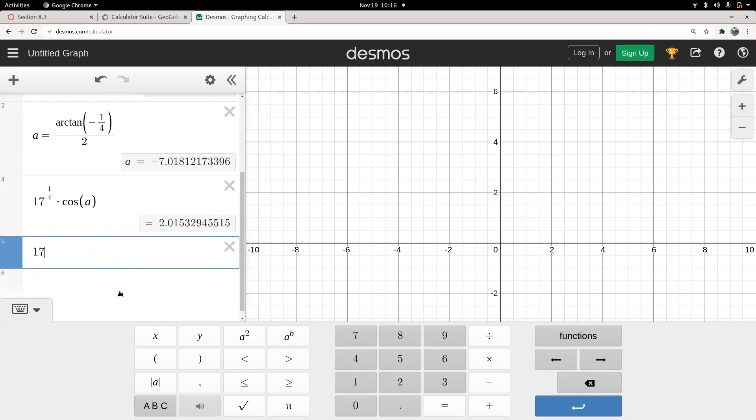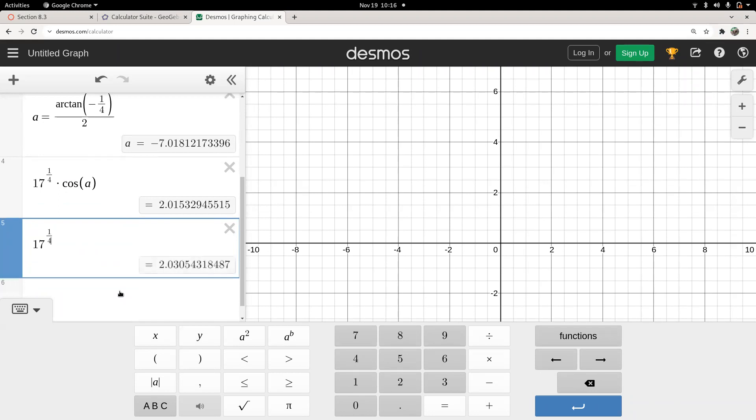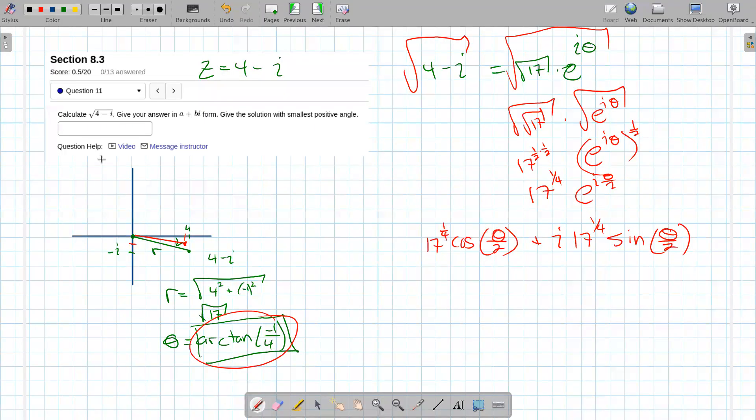And then 17 raised to the power one-fourth, times the sine of that angle A. That two does not look right. This might be right. Okay, what, did I type something wrong?